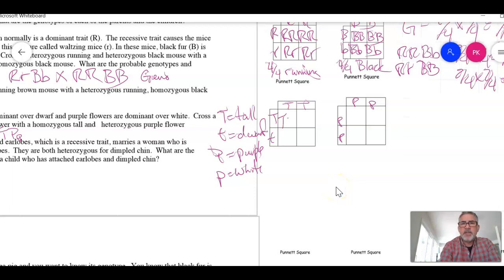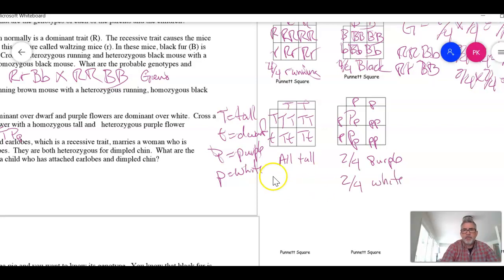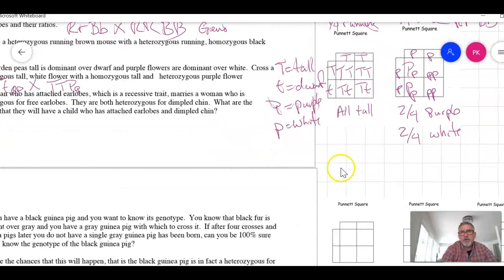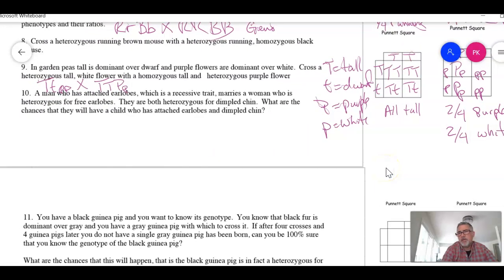You get two uppercases. Right. We got an uppercase, lowercase, and an uppercase, lowercase. So this is all tall. We get an upper and a lower, upper and a lower, lower, lower, lower. And this is two out of four are purple. And two out of four, right. So they're all tall with half the flowers being purple and half being white. Right. So that would be our cross there.